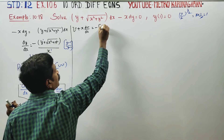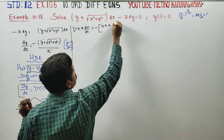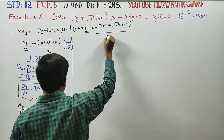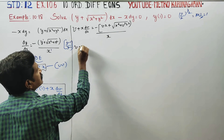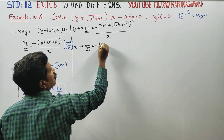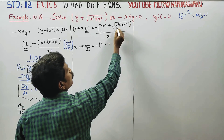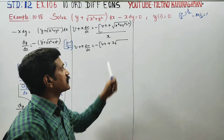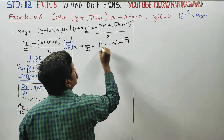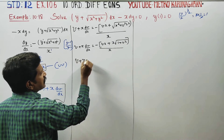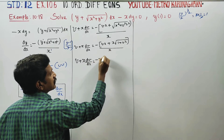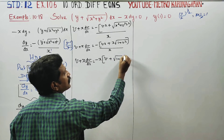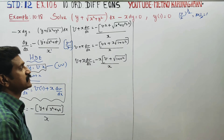y is equal to vx, plus root of x square plus y square, where y square is v square x square, all divided by x. Next: v plus x dv by dx is equal to minus of vx, plus x square common under root, divided by x.